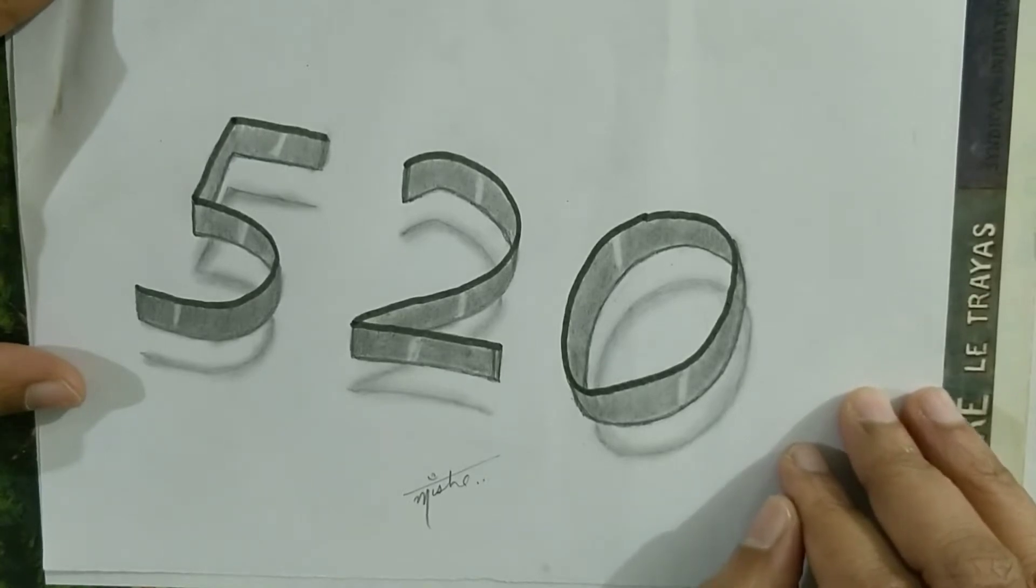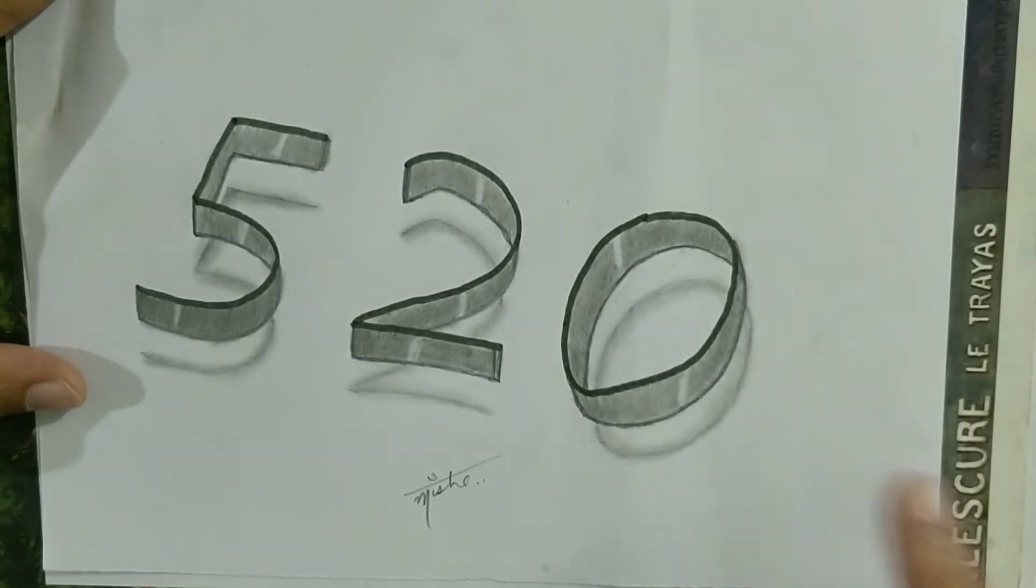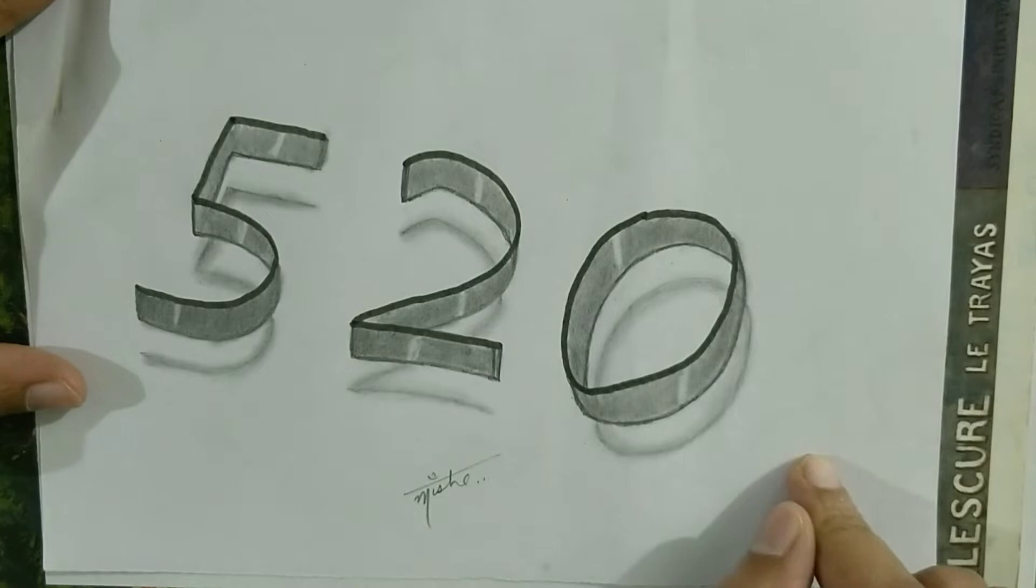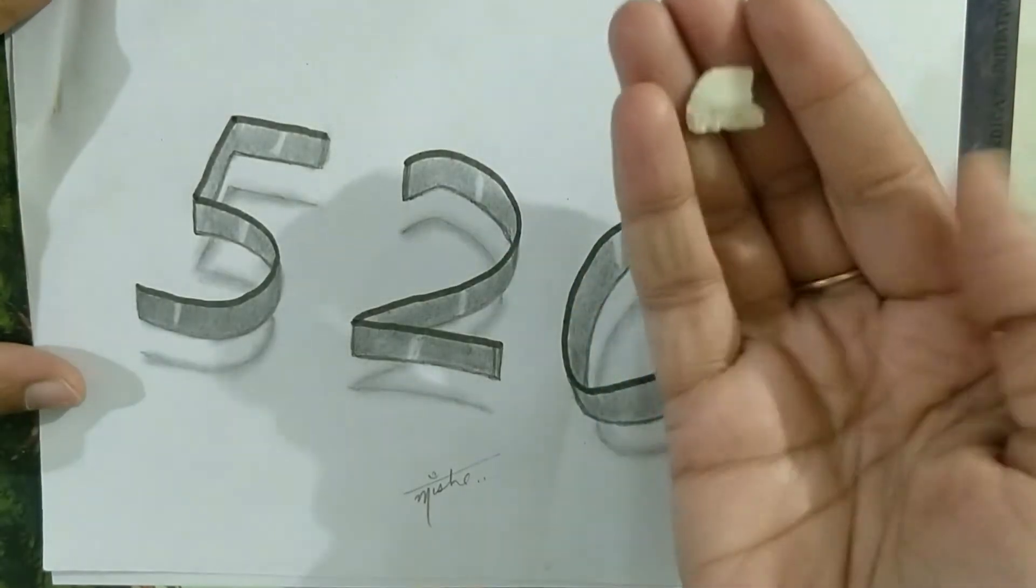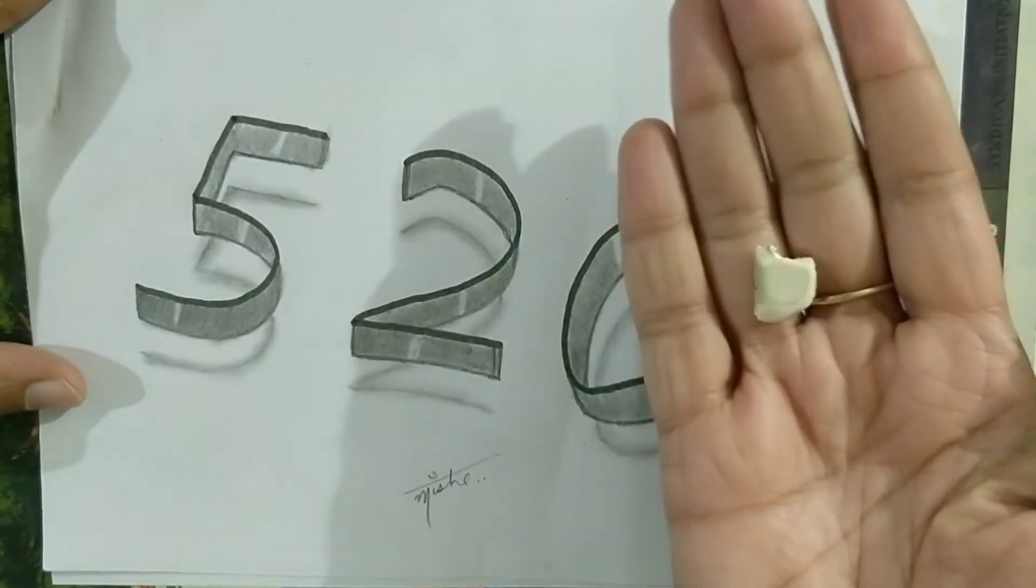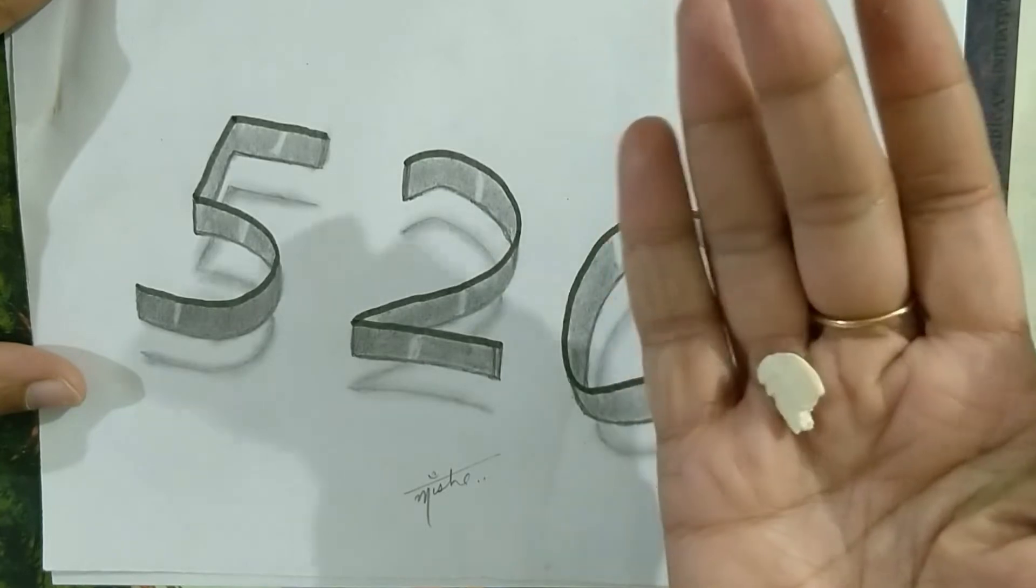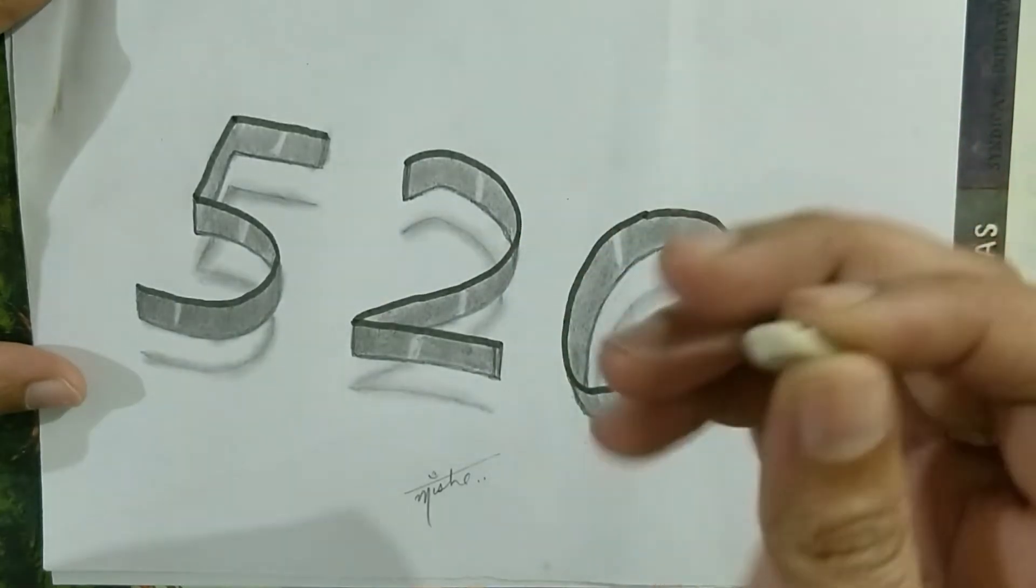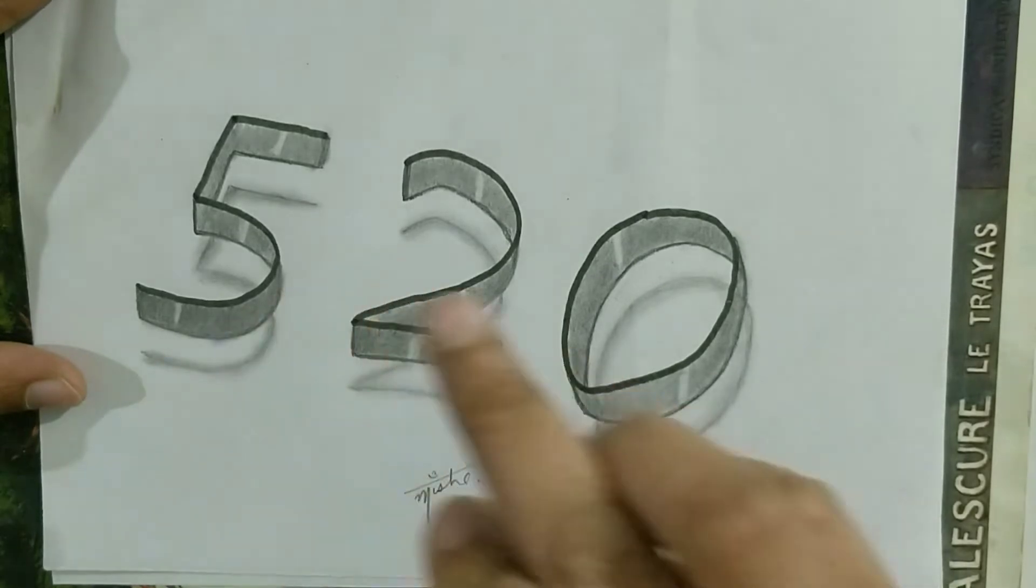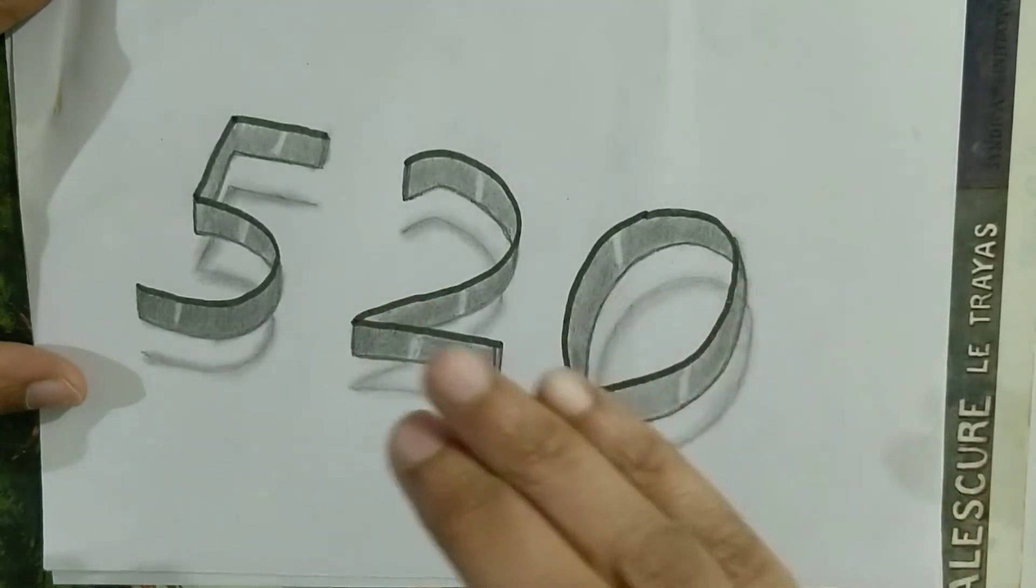The stuff we need is a black sketch pen, three HB pencils, one plain A4 sheet or drawing sheet, eraser, and ear bud for smudging. I'm using this tiny eraser which I have cut from a regular eraser. This will help me do the erasing wherever I want these light effects.